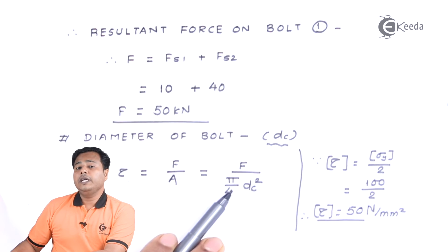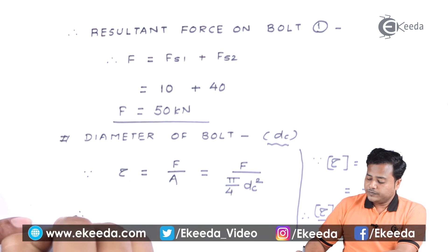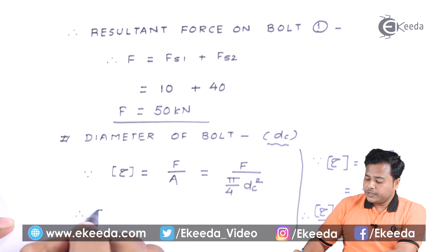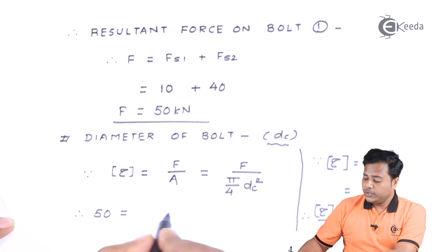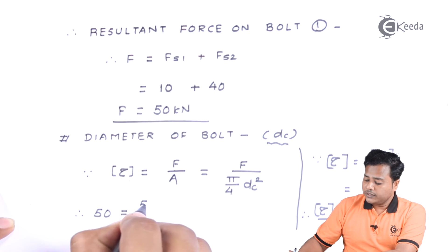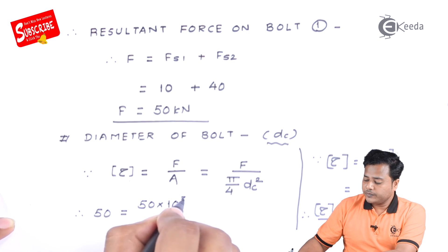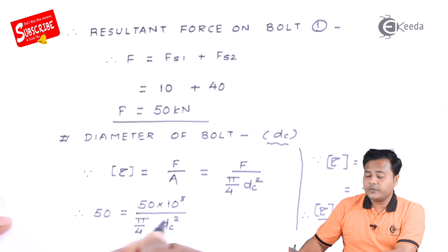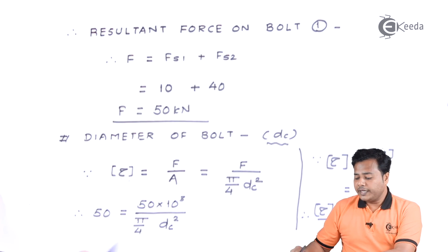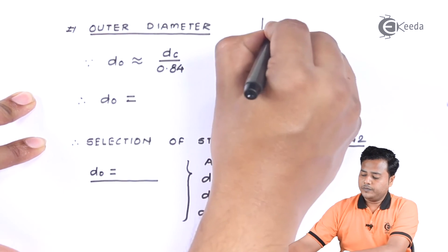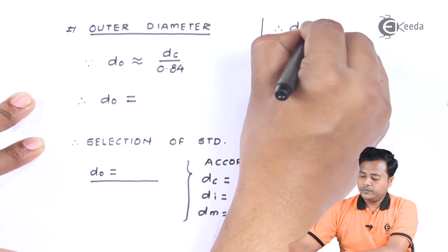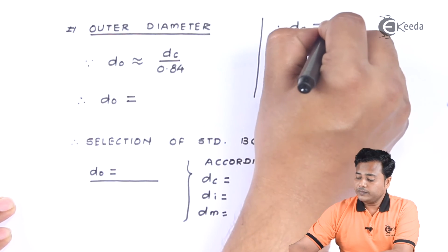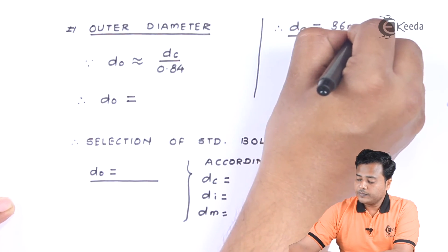Setting the shear stress equal to the allowable value: 50 equals 50 × 10³ divided by (pi/4 × DC²). Solving this expression for DC, we get the core diameter DC approximately equal to 36 millimeter.